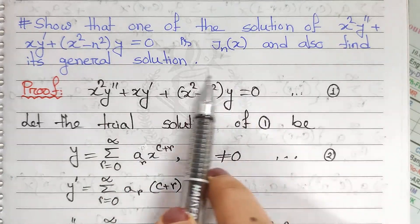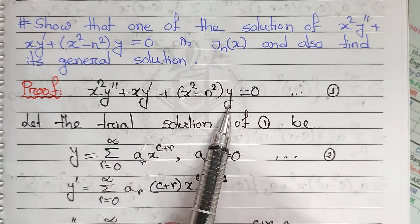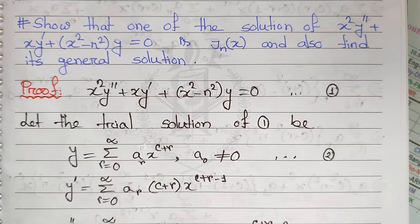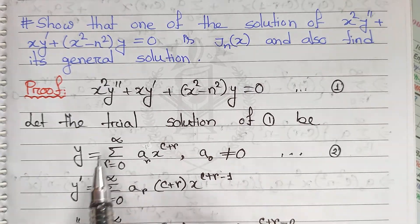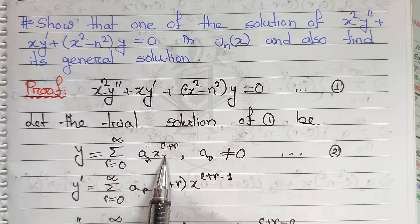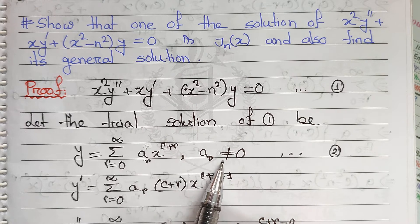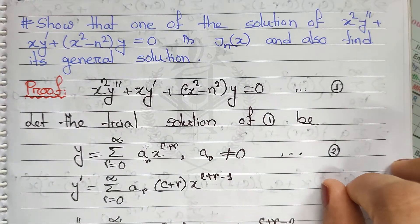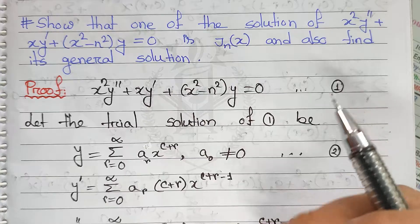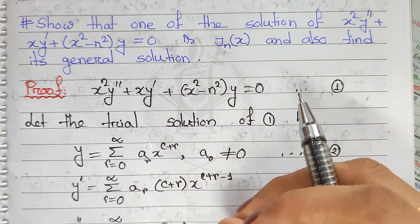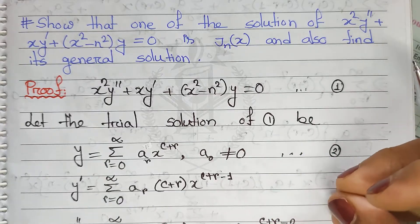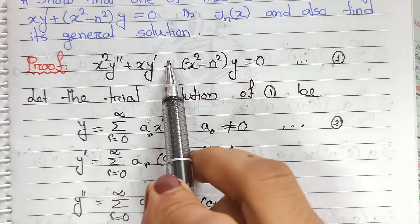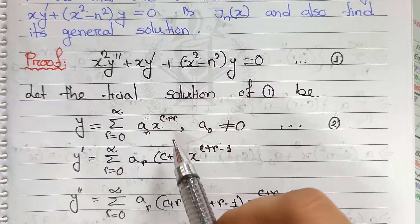This equation shows the power series solution of the differential equation: y = Σ (from 0 to ∞) aₙ · x^(c+r). This equation shows that y is not equal to 0, and the differential equation setup leads to the indicial equation. This is constant.